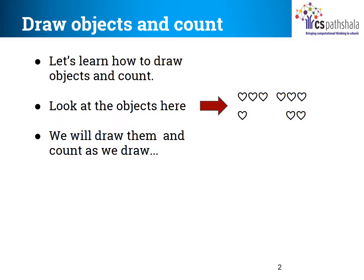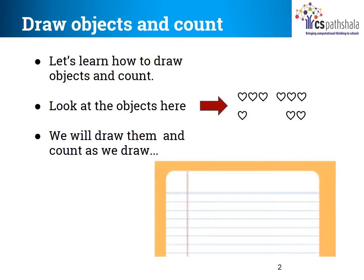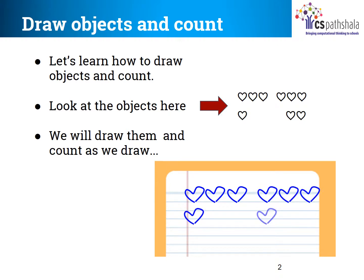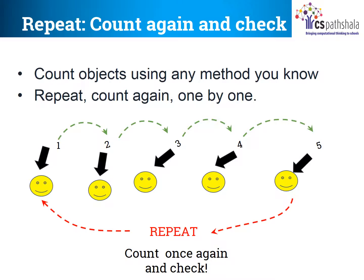Now let's see the fourth method — drawing the objects and counting. Look at the objects here; we will draw them and count as we draw. There is a page just like your notebook page. We will start drawing: 1, 2, 3, 4, 5, 6, 7, 8, 9. So we drew and we counted.